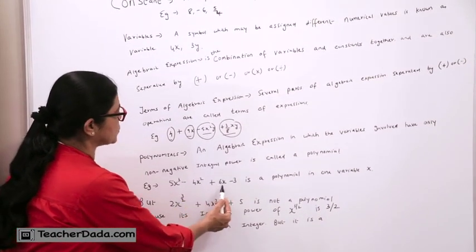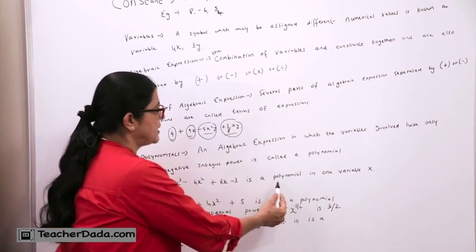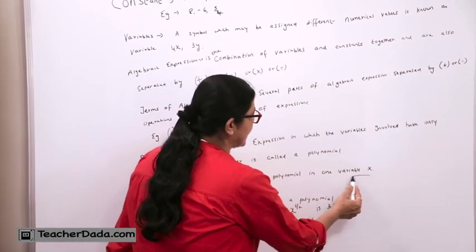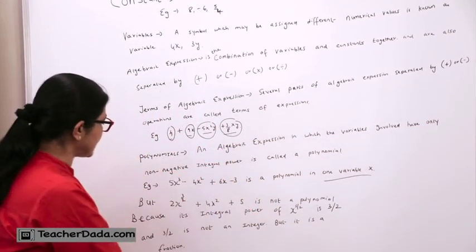For example, 5X cube minus 4X square plus 6X minus 3 is a polynomial in one variable X. Now see the other example.